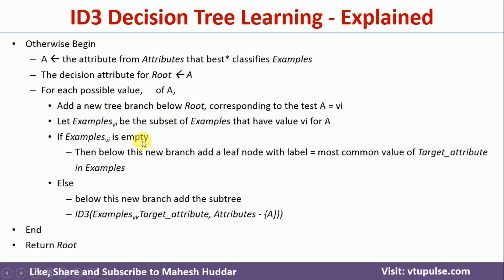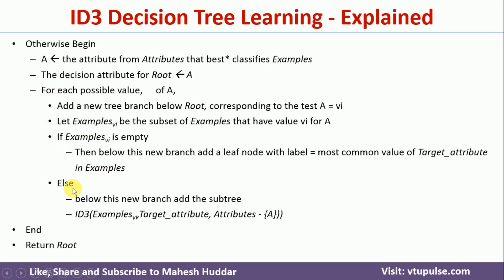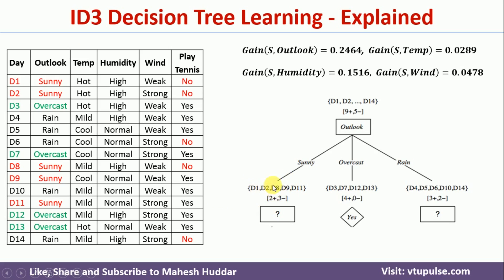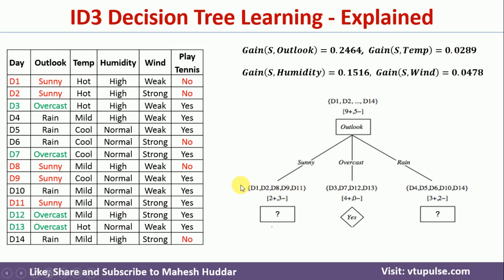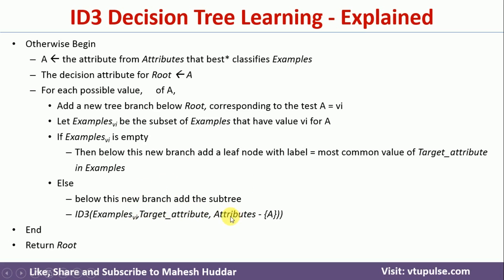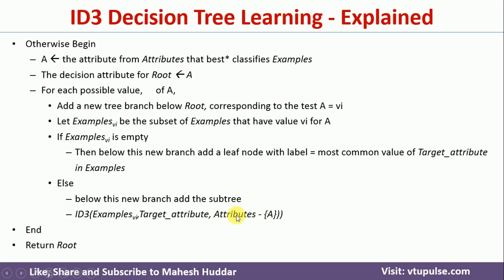If that subset of examples is empty, we take the most common value of the target attribute and assign it — though this may not often occur, it is a termination condition. If there are examples available, we go to the else part: we add a subtree at that branch. Assuming we are executing for the sunny branch, it will call ID3 again with the examples D1, D2, D8, D9, and D11, the target attribute, and the remaining attributes — temperature, humidity, and wind — since outlook has already been used. That is what 'attributes minus A' means.